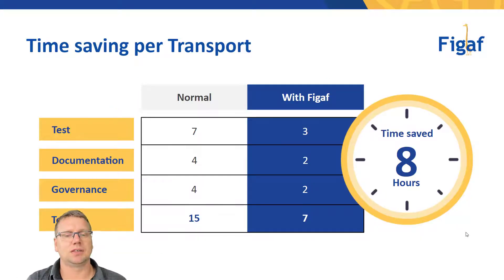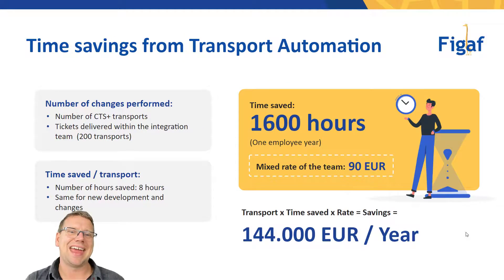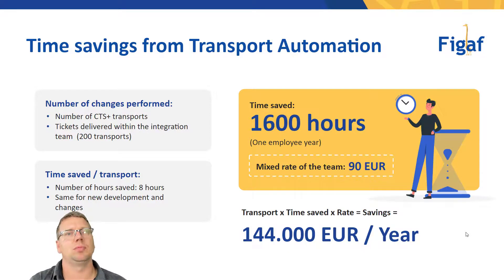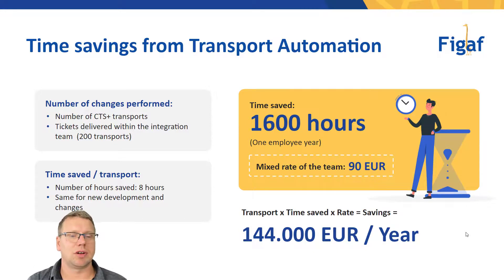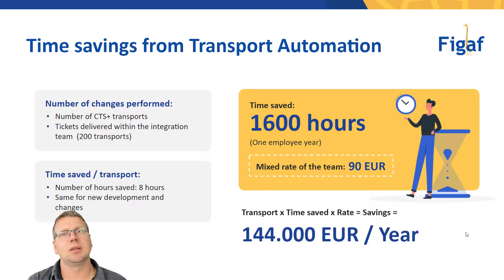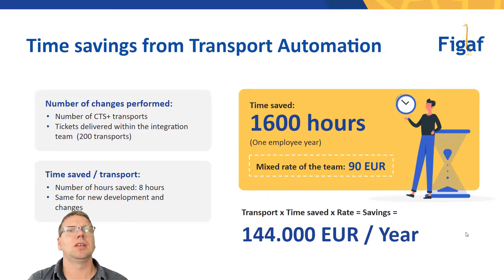If we sum all of these things up, it becomes that you save eight hours per transport. So what's the business case for just the transport automation? The easiest way to understand how many transports you have is to look at the number of CTS transports that have been imported into the productive system in a period of time. In this case it's 200 transports, and if we multiply that by eight hours it becomes 1,600 hours. With our mixed rate of 90 euros, that's 144,000 euros a year — a considerable amount of money that you're spending on the transport process that could be automated using the Figaf Tool.